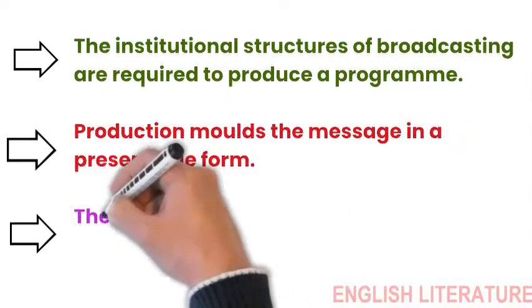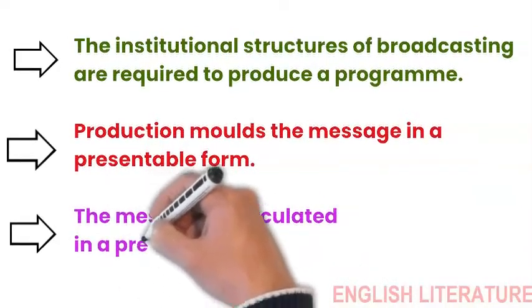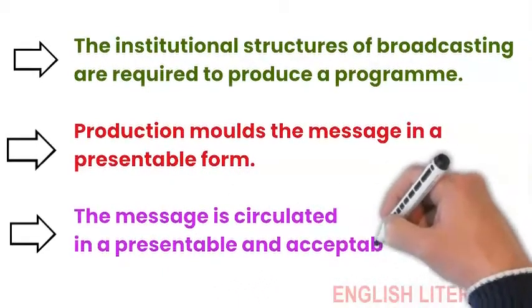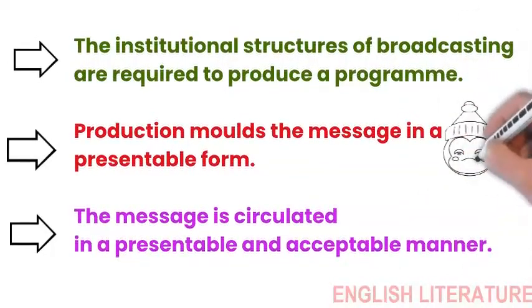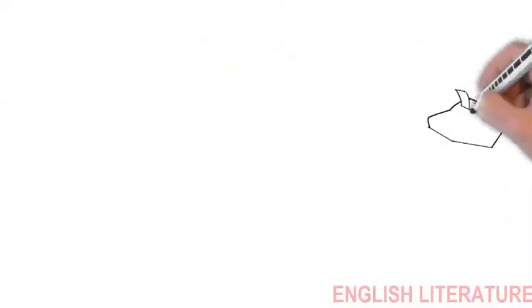The production process has its discursive aspect. It molds the message in a presentable form. Further, the production structures draw the message from the other discursive formations created by wider socio-cultural and political power structures like language, dominant culture, ideology, etc. After drawing on these discursive formations' available knowledge in society, the message is ideologically circulated in a presentable and acceptable manner.